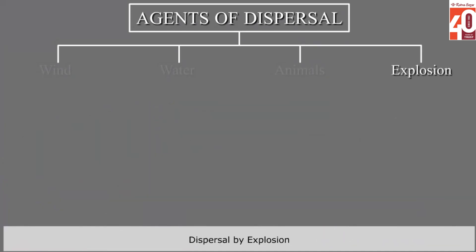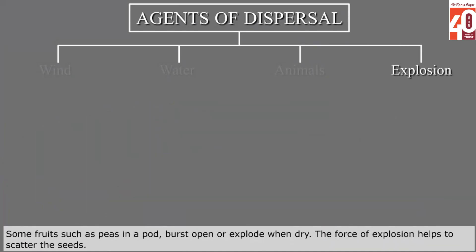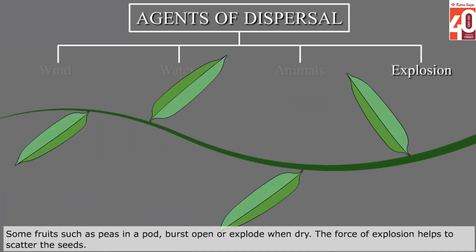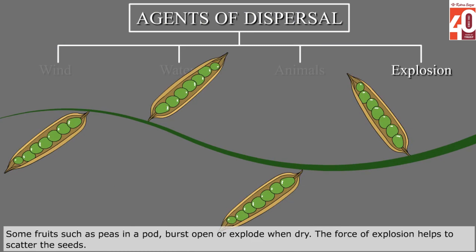Dispersal by explosion: Some fruits such as peas in a pod burst open or explode when dry. The force of explosion helps to scatter the seeds.